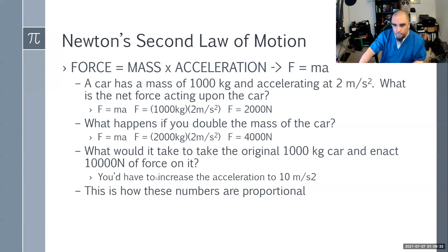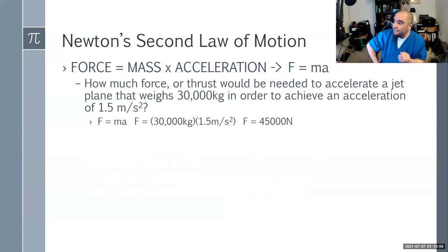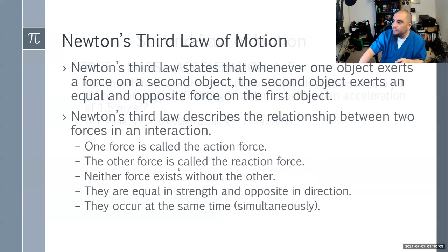These numbers are proportional — algebraic equations mean that when you change one side you have to change the other. For example, how much thrust is needed to accelerate a jet plane weighing 30,000 kilograms to achieve 1.5 meters per second squared? Force equals mass times acceleration: 30,000 kg × 1.5 m/s² = 45,000 newtons of force.